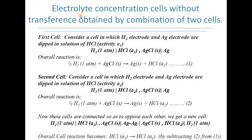The second type is electrolyte concentration cells without transference obtained by combination of two cells. Here, we take two cells and combine them in opposite directions. In the first cell, a hydrogen electrode and a silver electrode are dipped in HCl solution of activity A1, giving overall reaction: ½H₂ + AgCl → Ag + HCl(A1). In the second cell, the same electrodes are dipped in HCl solution of activity A2.